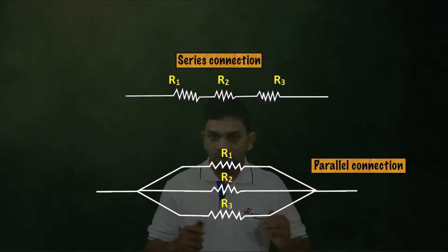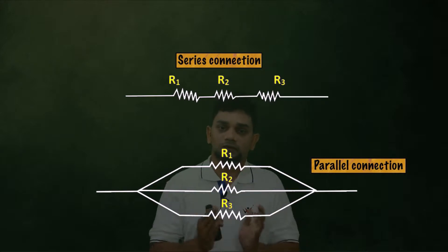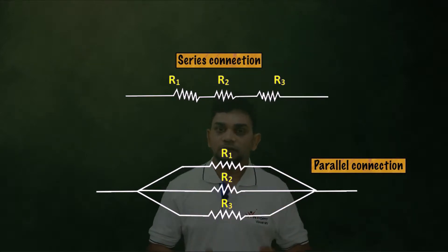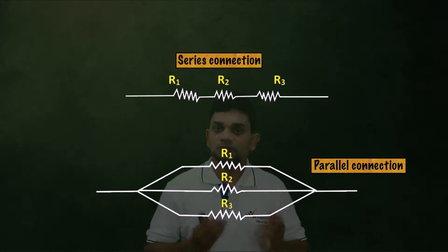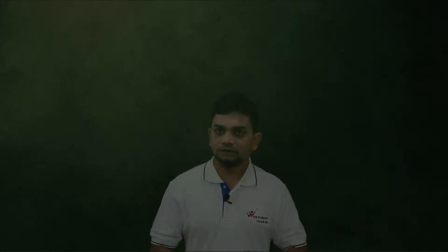Now we are going to discuss how to find the total resistance of a circuit, whether it is a parallel connection or series connection. Before that, we need to learn some of the properties of this type of connection. Let's learn that first. First we can discuss series connection.